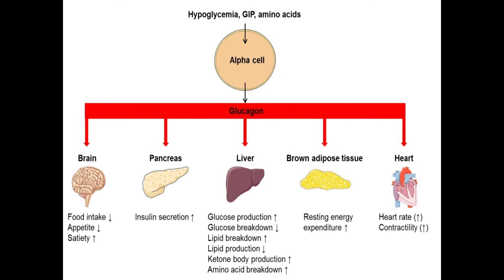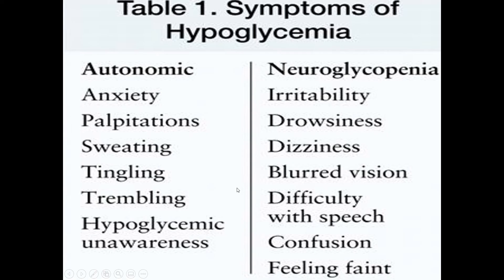In this slide you can see that whenever there is hypoglycemia, the alpha cells of the pancreas release glucagon. There are different cells in the islets of Langerhans: alpha cells produce glucagon — 'gluco' means glucose, 'gone' means it has gone. So whenever there is hypoglycemia and no glucose, glucagon comes into action. Its main site of action is the liver, where it causes gluconeogenesis to provide glucose to your body.